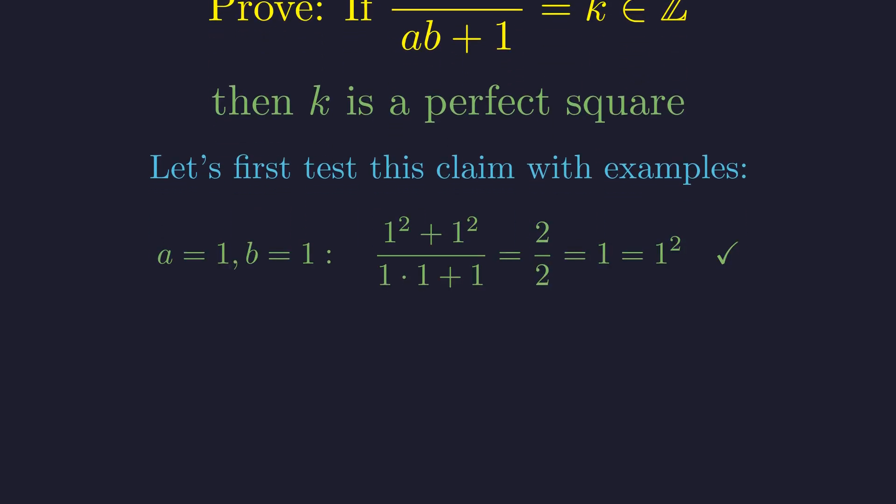For a equals 1, b equals 1, we get 2 divided by 2 equals 1, which is a perfect square.